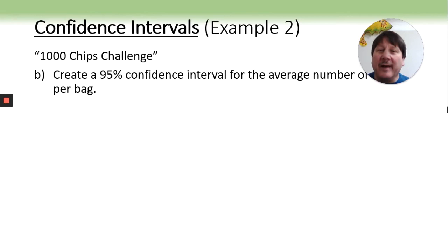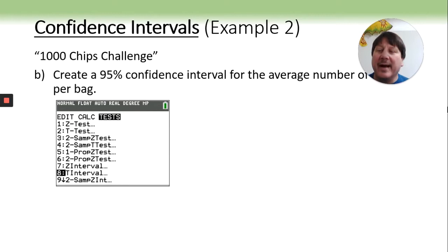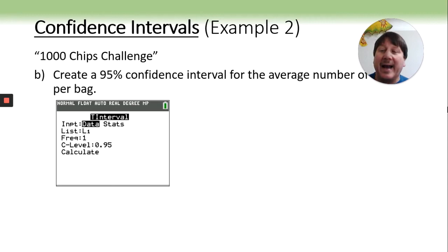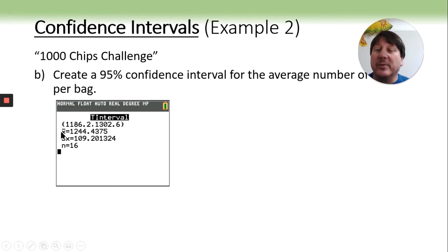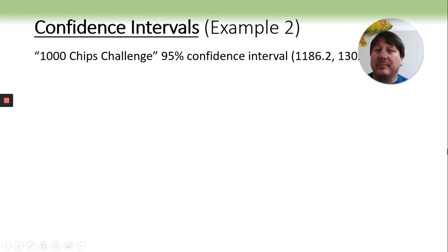Let's go ahead and create a confidence interval. There's your data in your list. Go on down to T interval, just like we did in the last one, except this time we will select data. So you do not have to know what the mean and standard deviation are. Your calculator will do that as it goes through. Notice it also does return your sample average, which is going to be right in the middle of that, and then your sample standard deviation.